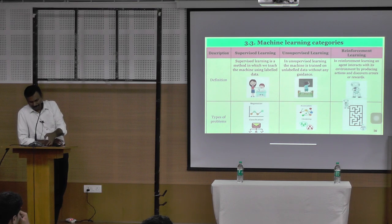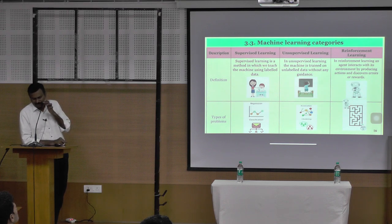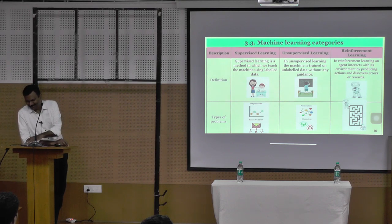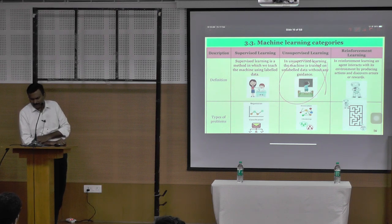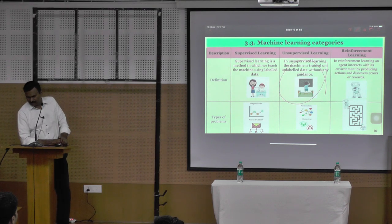No need to explain algorithm. In the deep machine learning categories, there are three types: supervised learning, unsupervised learning, and reinforcement learning. Supervised learning is the method in which we teach the machine using labeled data — I know what is input, what output I expect. Unsupervised learning — the machine is trained on unlabeled data without any guidance; no guidance, nothing — it will do it on its own. Reinforcement learning — an agent interacts with its environment by producing actions and discovers errors or rewards.